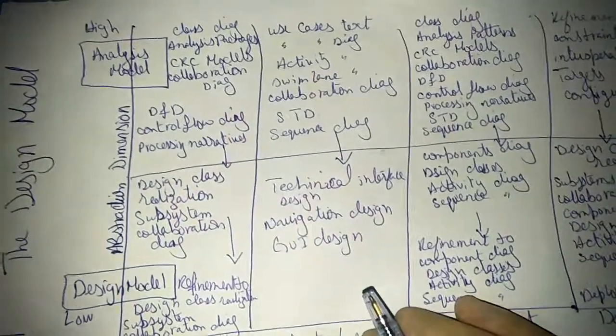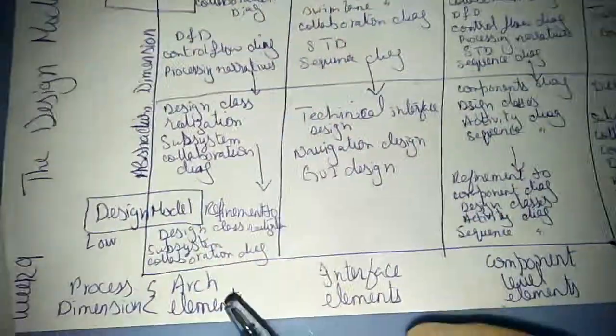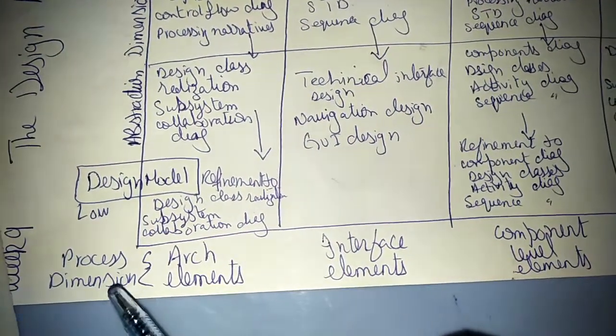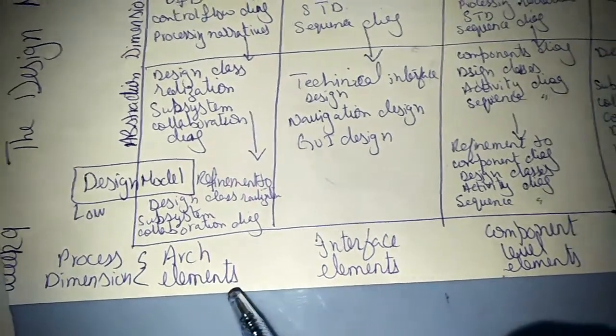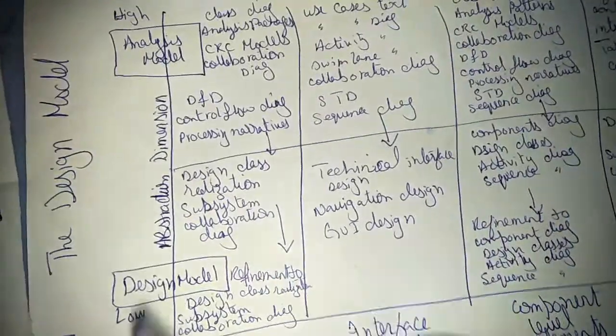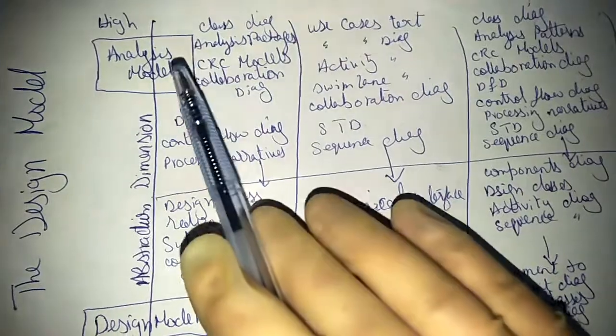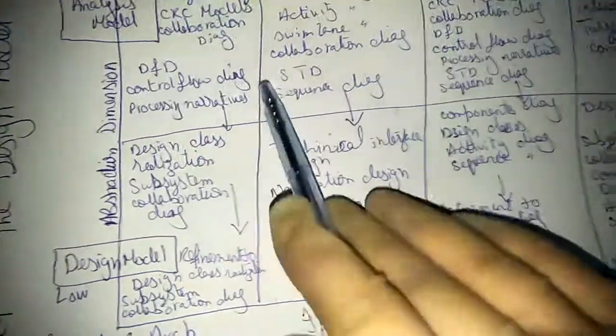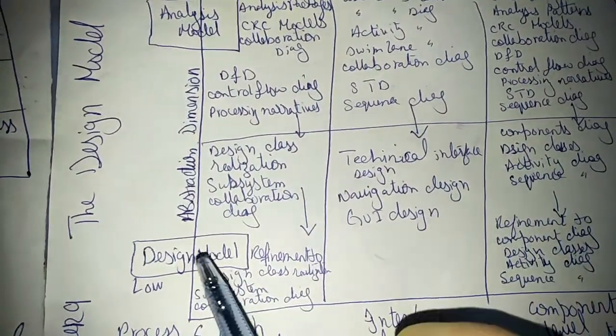Design model week 9. The diagram has been distributed horizontally and vertically. The horizontal line identifies the process dimension, which indicates the evolution of the design model. The vertical line represents the abstract dimension, which represents the level of analysis modeling, and that is transformed into an equivalent design model. The high level represents the analysis design and the low level represents the design model.